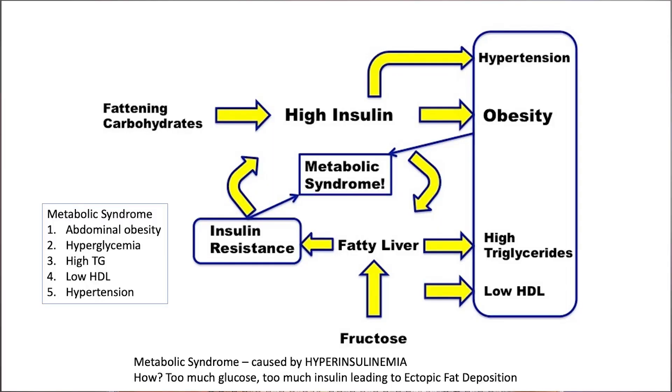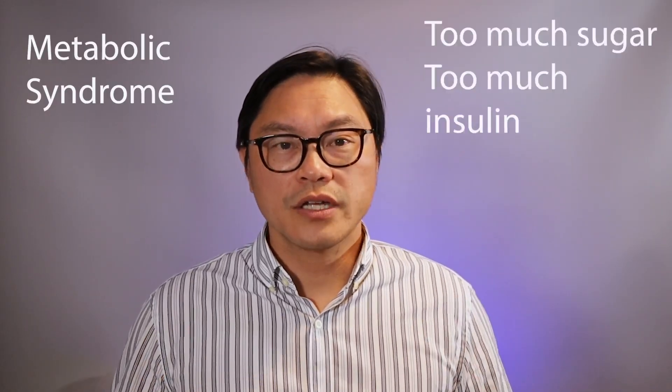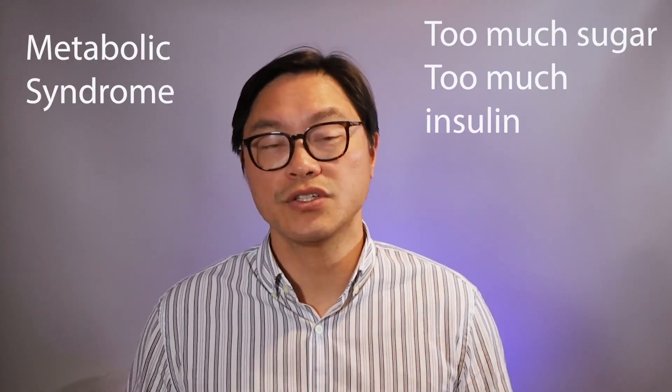Those are the five things that make up the metabolic syndrome: abdominal obesity, high triglycerides, low HDL, high blood pressure, and insulin resistance, which causes high blood glucose. It's really the insulin resistance and the hyperinsulinemia — those two are two sides of the same coin — that lead to the overflow of glucose into the blood. When blood glucose goes up, that's how you diagnose type 2 diabetes and hyperglycemia. So those five things, which all go together, are really caused by the same thing: hyperinsulinemia.